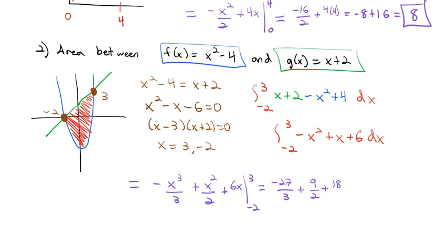Plugging in 3: negative 3 cubed is 27 thirds, plus 3 squared is 9 halves, plus 6 times 3 is 18. Then subtracting the lower limit: negative 2 cubed is negative 8, so the opposite is positive 8 but we subtract it, giving negative 8 thirds. Negative 2 squared is 4 divided by 2 is 2, subtracted. Negative 2 times 6 is negative 12, opposite is positive 12. Plugging all that into our calculator, we end up with 125 sixths as the area between these two curves.